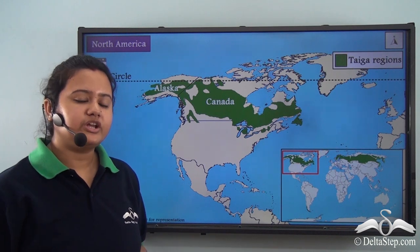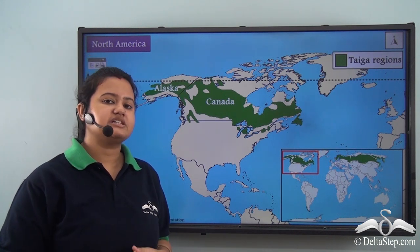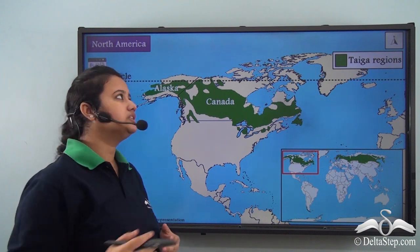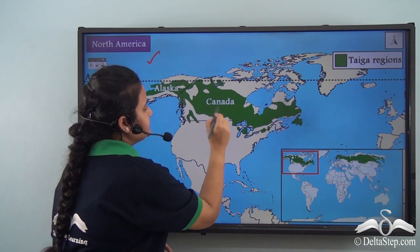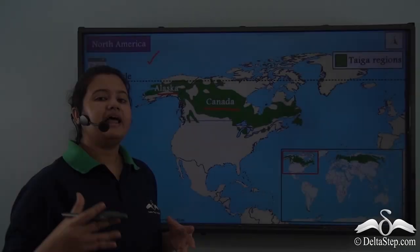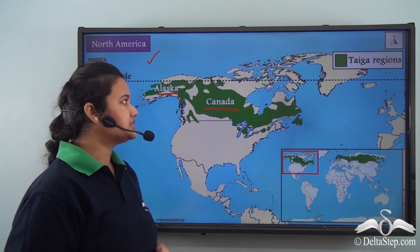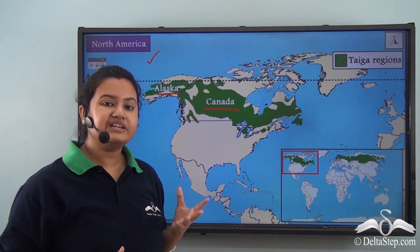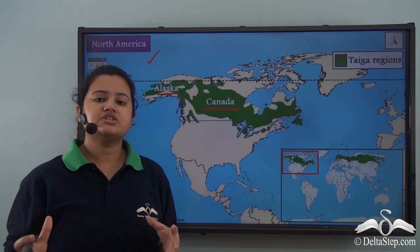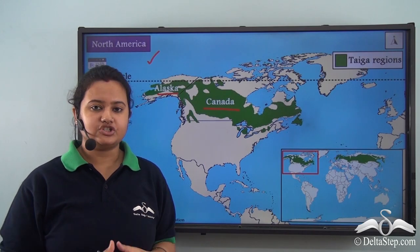Apart from Eurasia, Taiga regions are also present in some countries of North America, like Canada and Alaska. The biome mostly covers the southern portions of these countries. This is all about the location of the Taiga region.